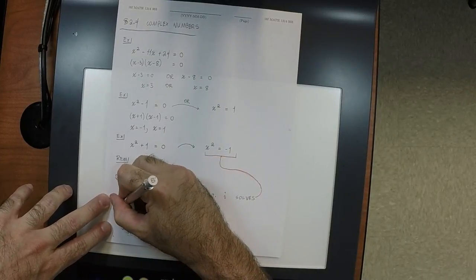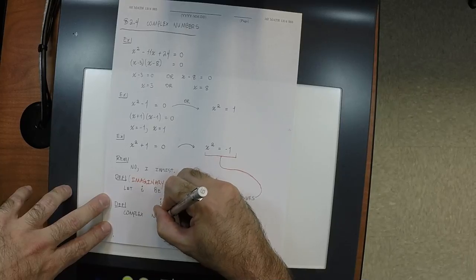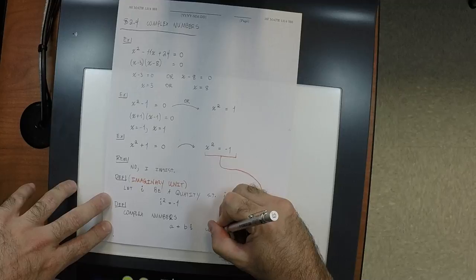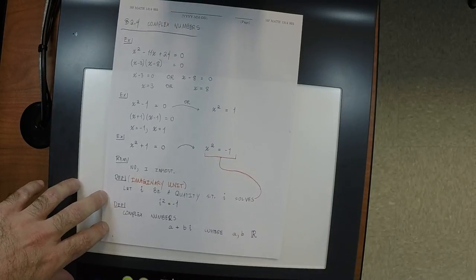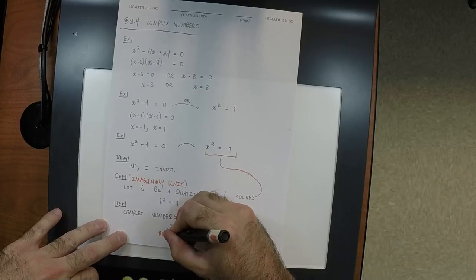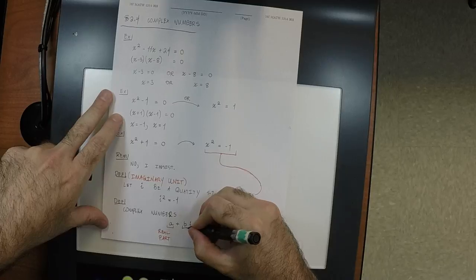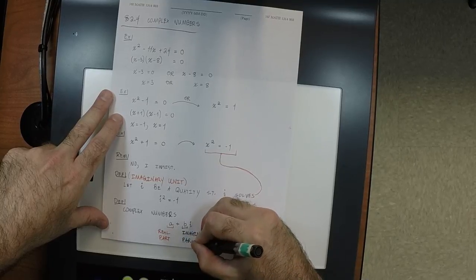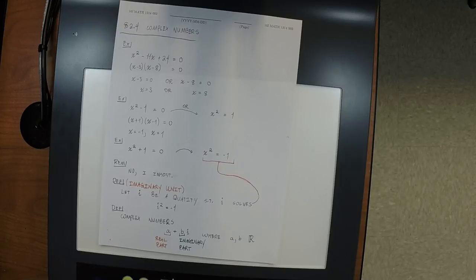Now we have another definition. The set of complex numbers is the set of all expressions a plus bi, where a and b are each real. A is called the real part, and B is called the imaginary part — not B times i, just B.